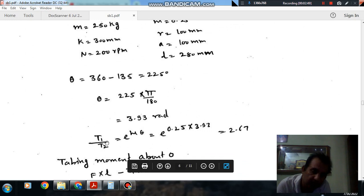From the angle of contact or tension ratio relation, we have T1 by T2 equal to e to the power mu theta. Mu is 0.25 and theta is 3.93, so the T1 to T2 ratio is 2.67.